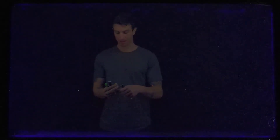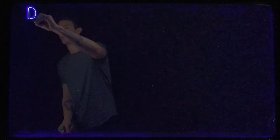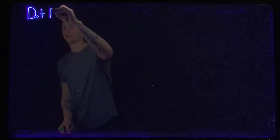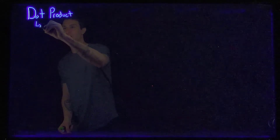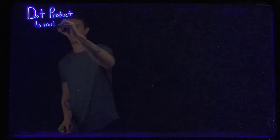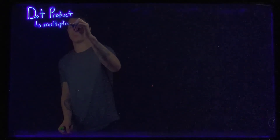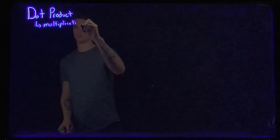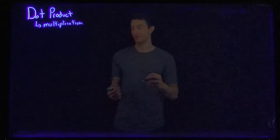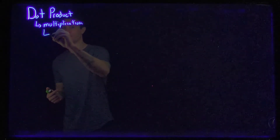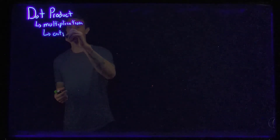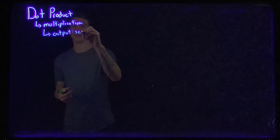Welcome into our third video for Calculus 3. Last video we talked about vector addition as well as introducing vectors and scalar multiplication. Today we're going to talk about the dot product, and the way I want us to think about it is as multiplication between two vectors. When we take these two vectors and multiply them together, our output is going to be a scalar.